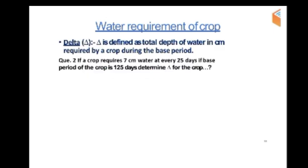Delta is the water requirement of a crop. Delta is defined as the total depth of water in centimeters required by a crop during the base period. The depth of water available in the base period is expressed as delta, represented in centimeters.